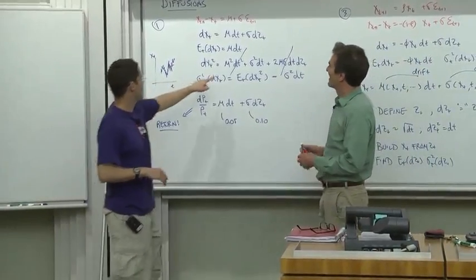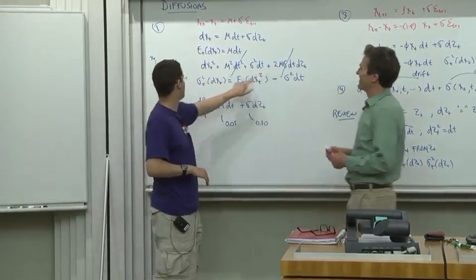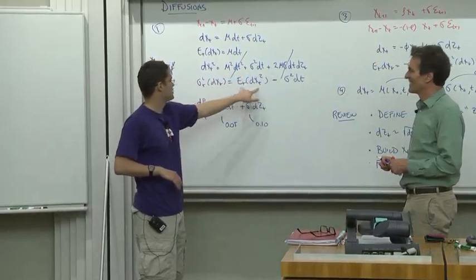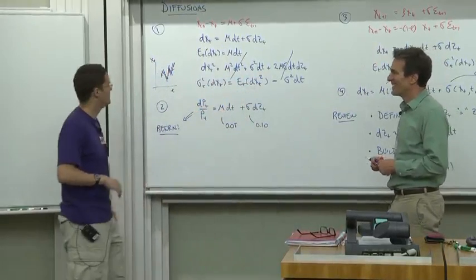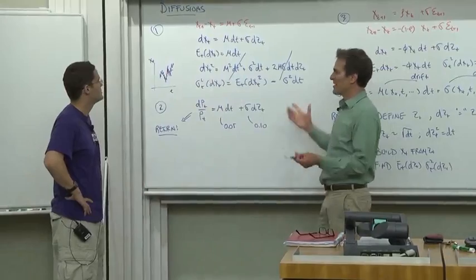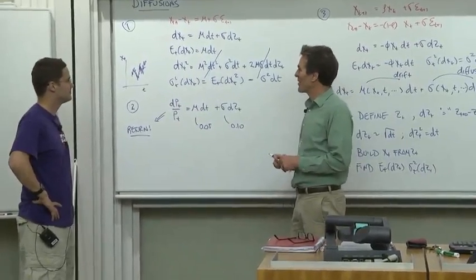How come you just got rid of these terms here to get that the variance is this term? Don't you have to subtract the square of the expected value? That's right. Variances are supposed to have the means out, aren't they? Yes.